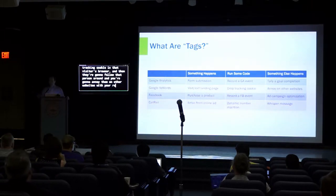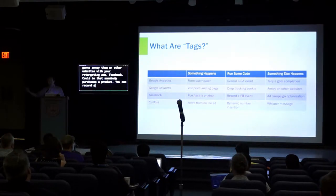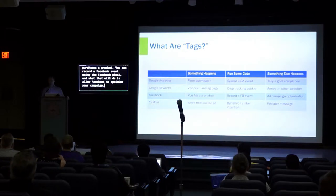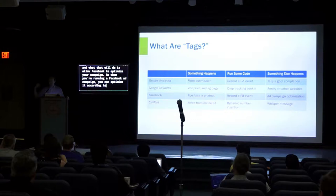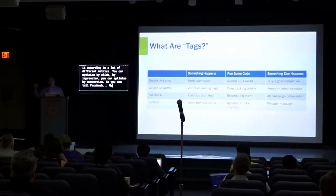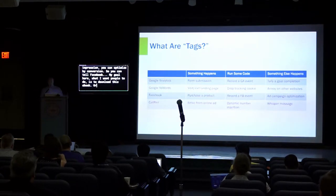For Facebook, it could be that somebody purchases a product. You can record a Facebook event using the Facebook Pixel, and that will allow Facebook to optimize your campaign. When you're running a Facebook ad campaign, you can optimize by click, by impression, or by conversion — you can tell Facebook your goal is to have people download this eBook or purchase this product.